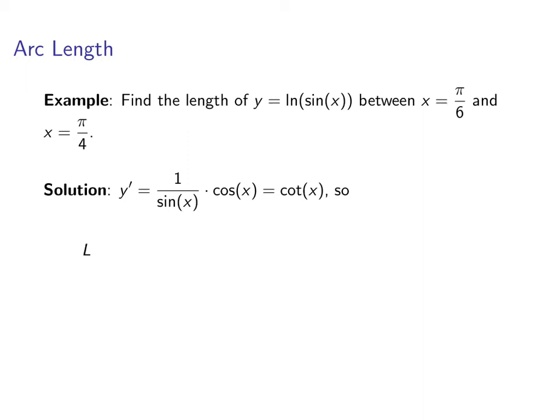So now we can write down an integral for the arc length. We'll get integral from pi over 6 to pi over 4 of the square root of 1 plus cotangent squared x dx.